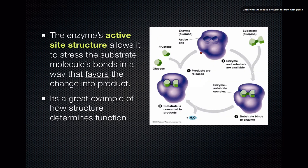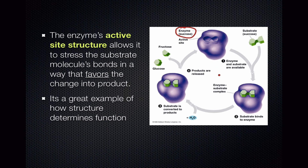Now let's look at an example. This is an enzyme called sucrase — this purple shape is the sucrase enzyme and it is a digestive enzyme. It's going to digest a substrate called sucrose, and you'll notice the sucrase enzyme has an active site that can receive a sucrose molecule. Remember, sucrose is a disaccharide made from a glucose and a fructose bonded together by a glycosidic linkage. By induced fit, the substrate fits into the enzyme, and now we have the enzyme-substrate complex.